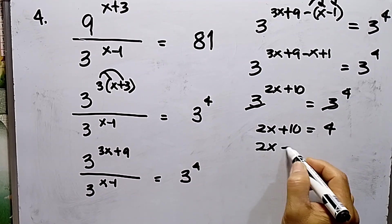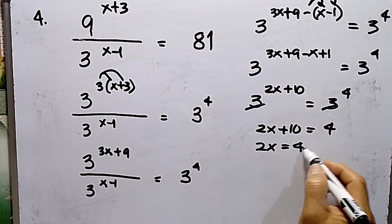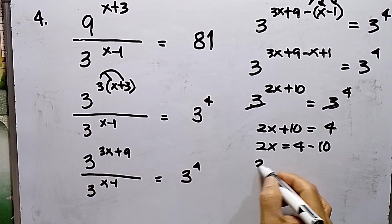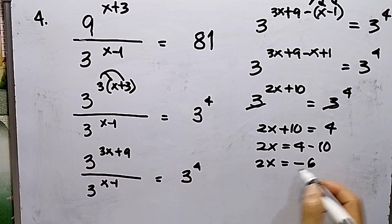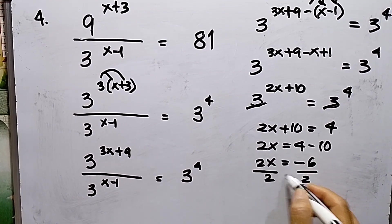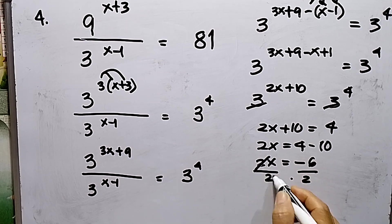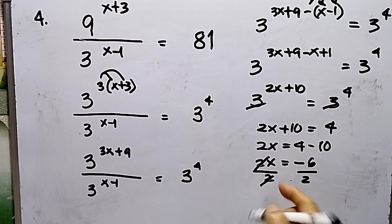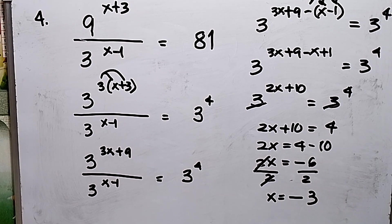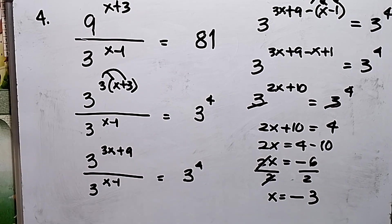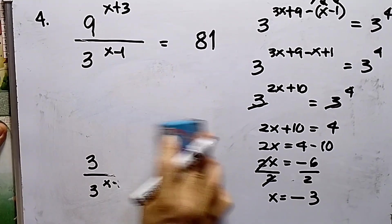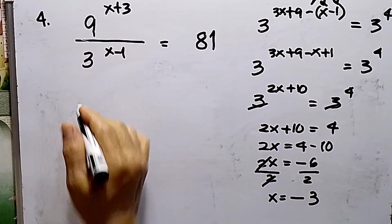So 2x plus 10 equals 4. This gives 2x equals 4 minus 10, so 2x equals negative 6. Dividing both sides by 2, the 2s cross out and x equals negative 3.